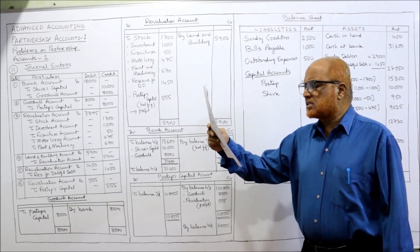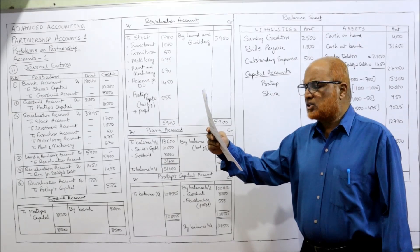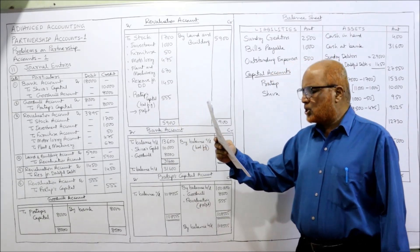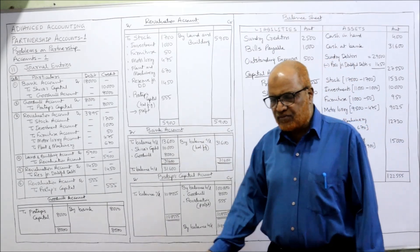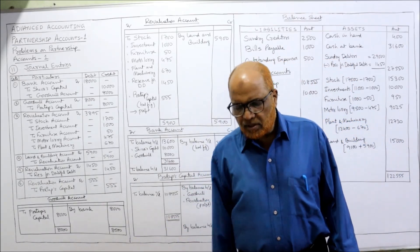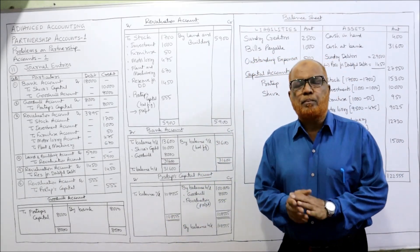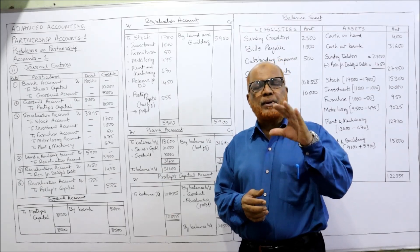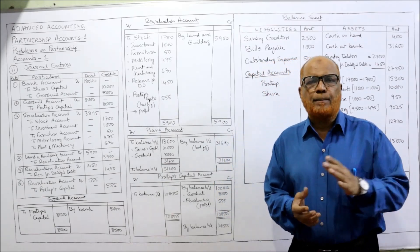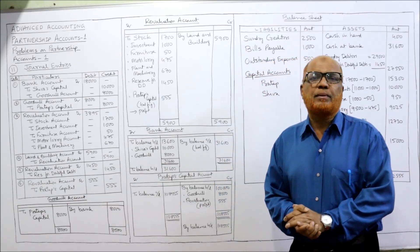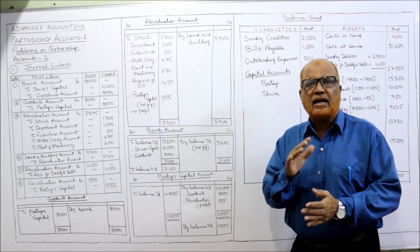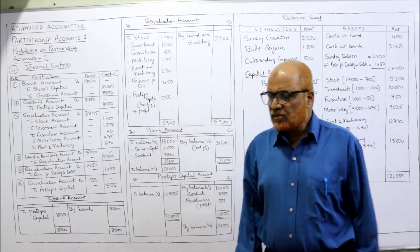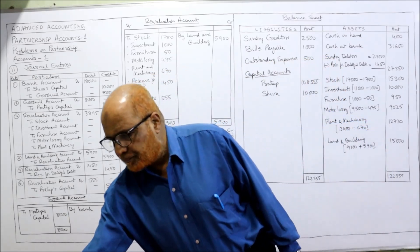We are required to pass the journal entries to record the above adjustments, prepare the ledger accounts, and then prepare the balance sheet of the firm after the admission of Shiva.